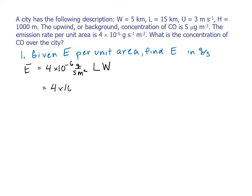So we take our emission rate of 4 times 10 to the minus 6 grams per second per square meter and multiply by the area of the land surface, which is L times W. This is 4 times 10 to the minus 6 grams per second per square meter times the length, which is 15 kilometers or 15,000 meters, times the width, which is 5 kilometers or 5,000 meters. And this gives me an emission rate of 300 grams of carbon monoxide per second.